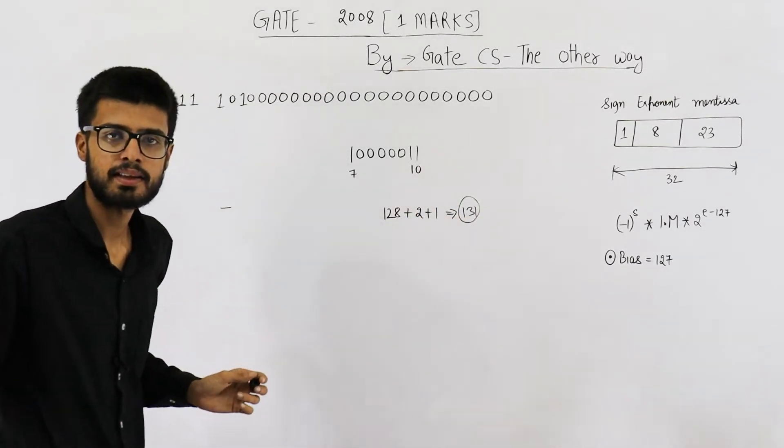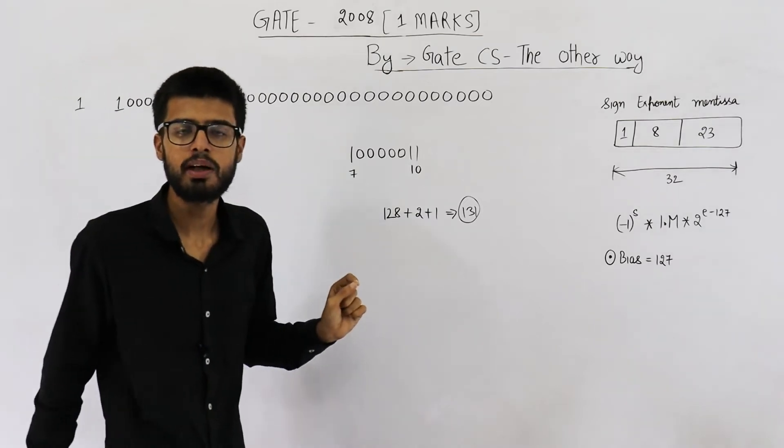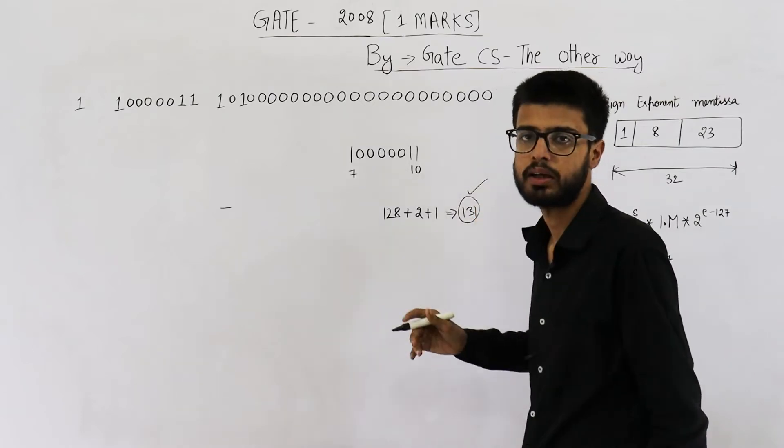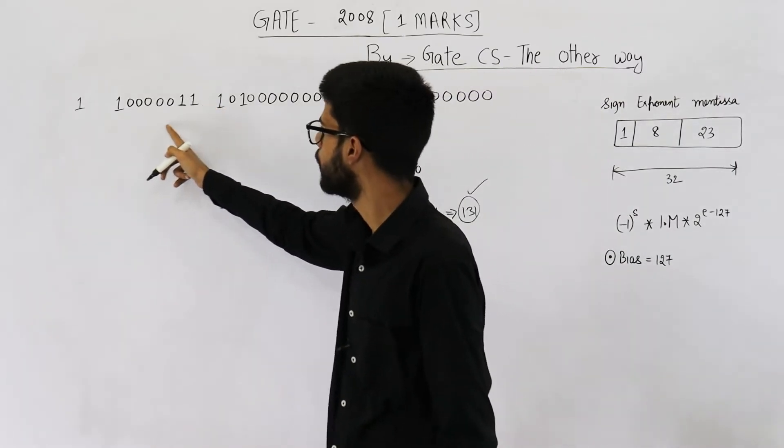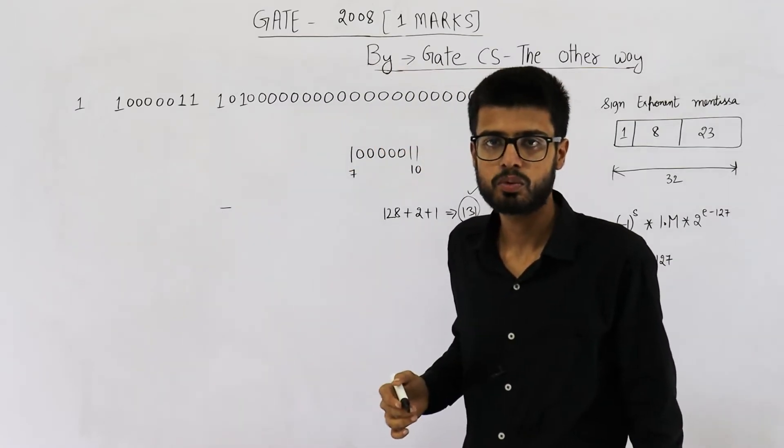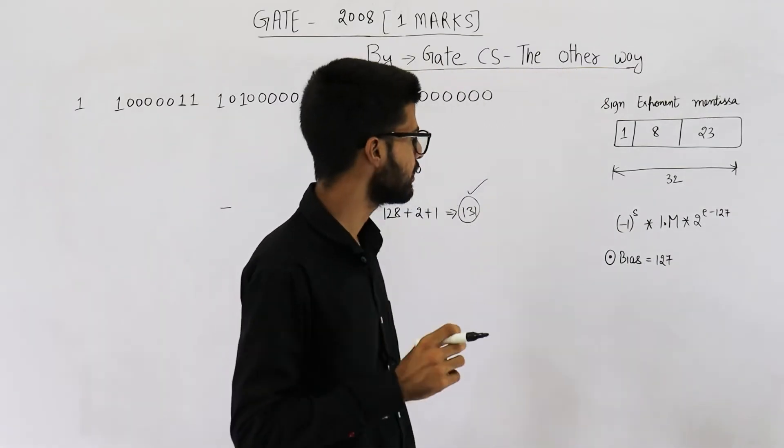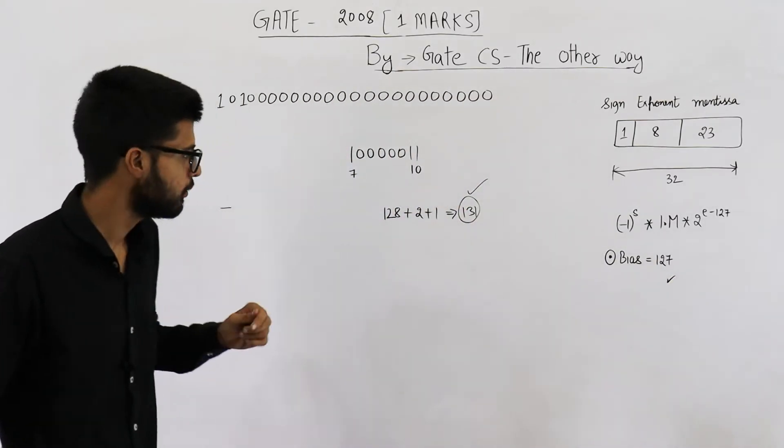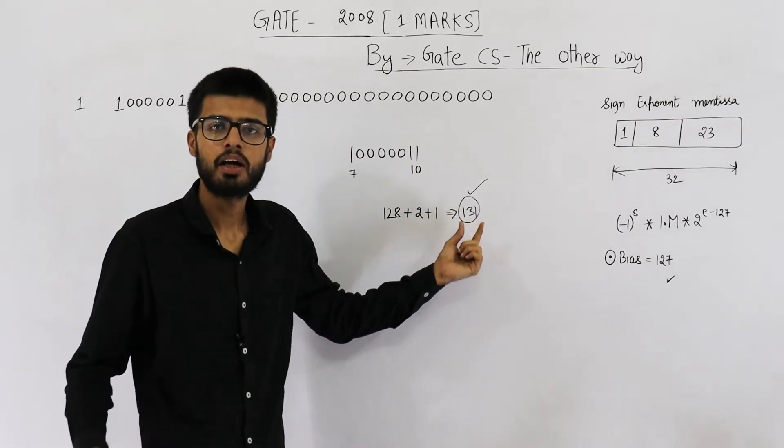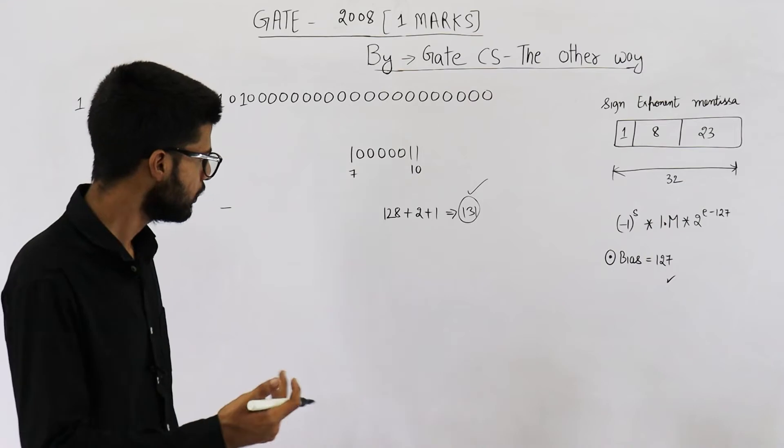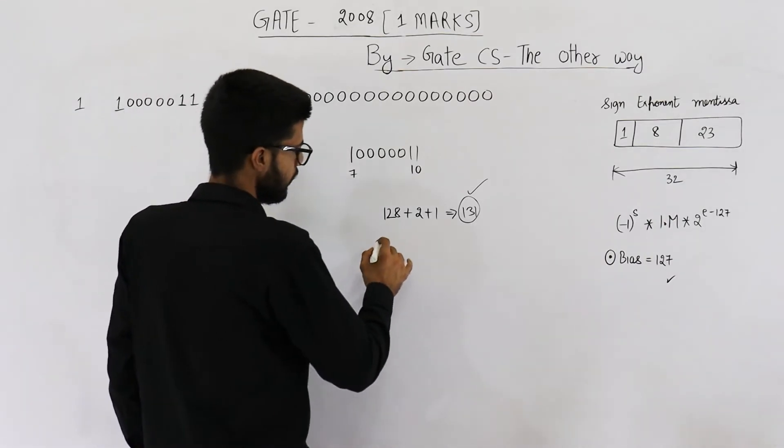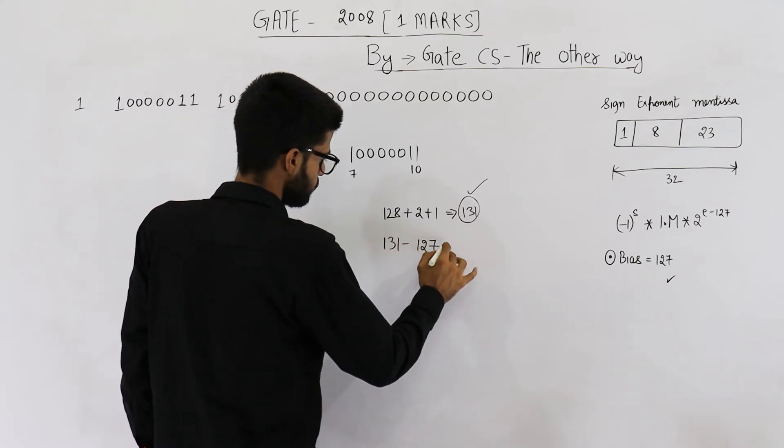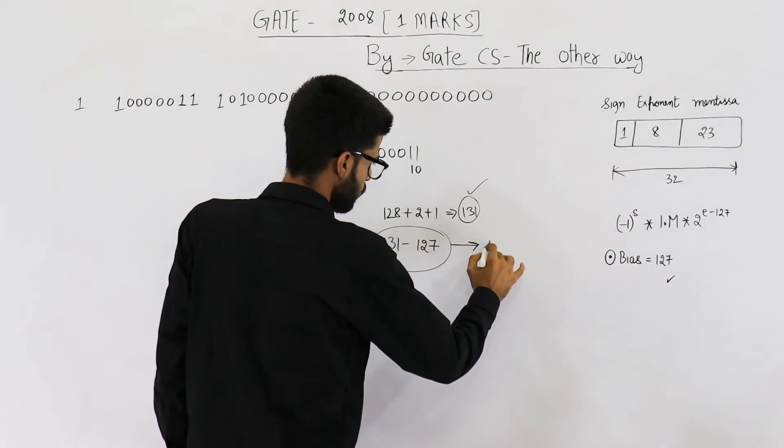So whatever is saved in this pattern as exponent of the number, it is 131. This is biased exponent. Whenever we save something in this field, we always add a bias to it. And in IEEE 754 32 bit, bias is 127. That means while saving this exponent, we added 127 to it. Now to retrieve the original exponent, let us subtract 127. So 131 minus 127, this value will be 4.